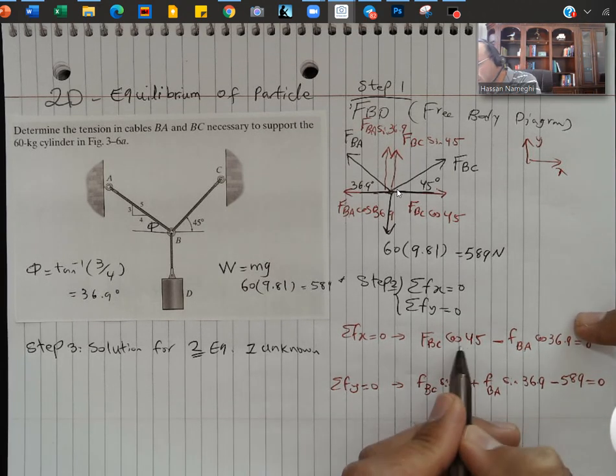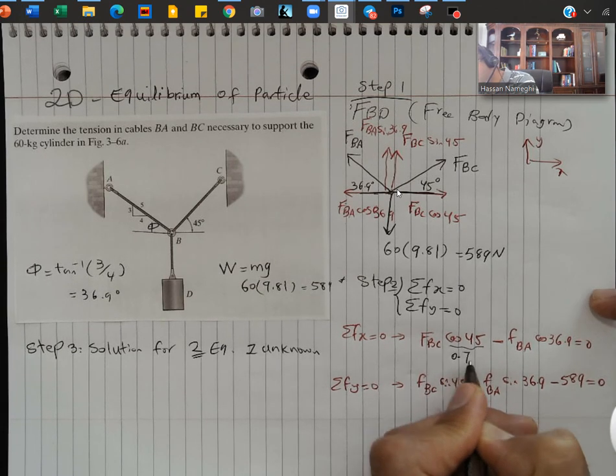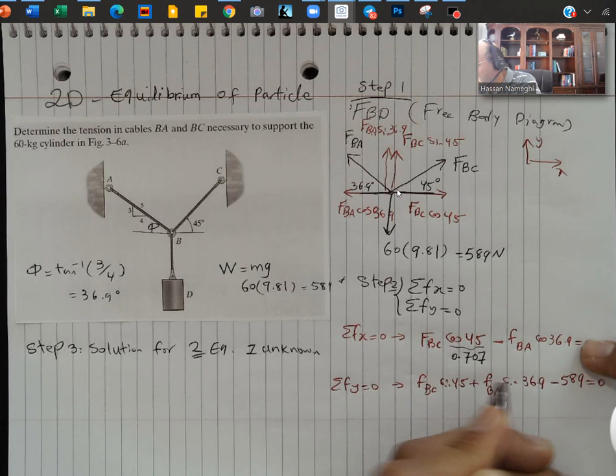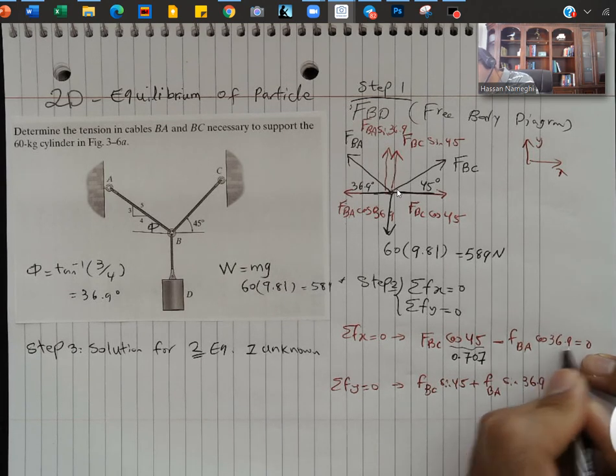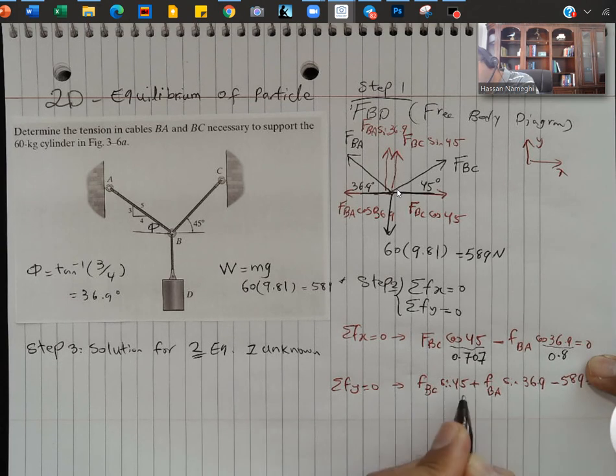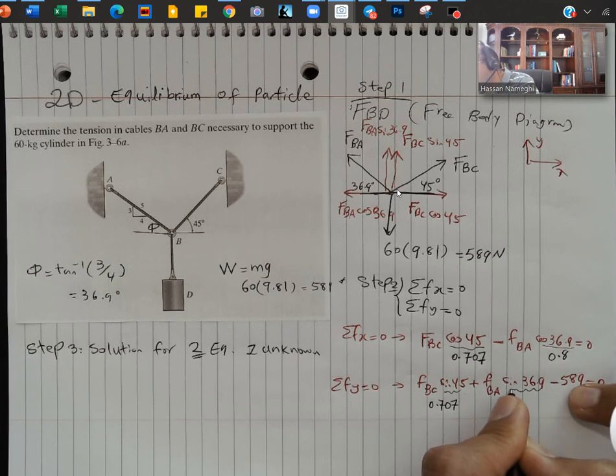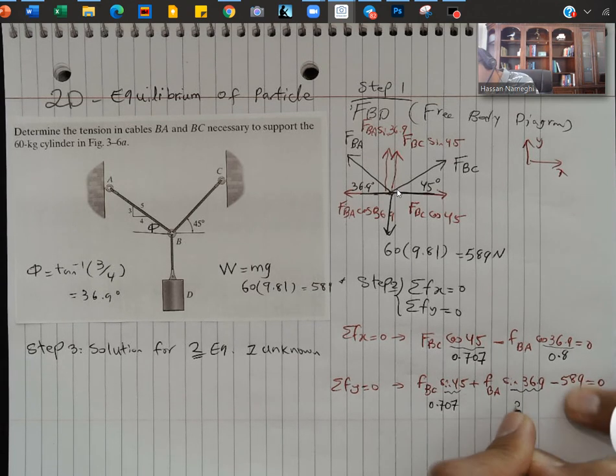This is actually 0.707, and then this one cosine 36.9 is 0.8. Sine of 45 degrees is 0.707, and then sine of 36.9 I got it as 0.6.